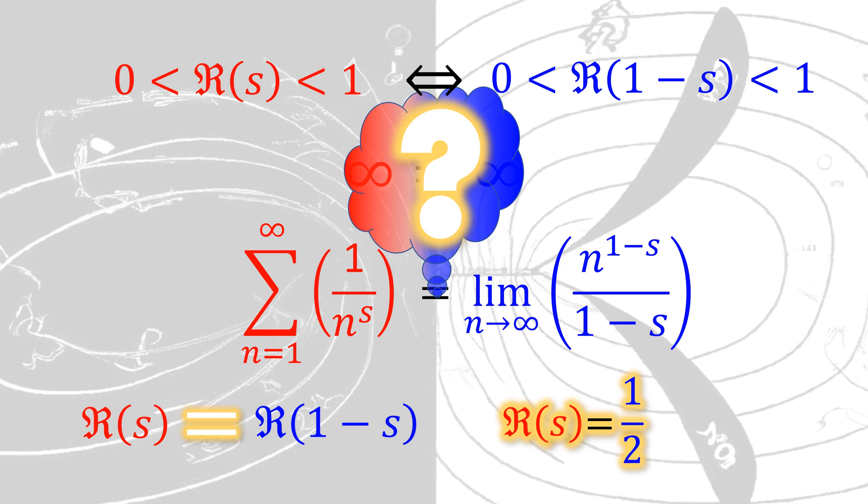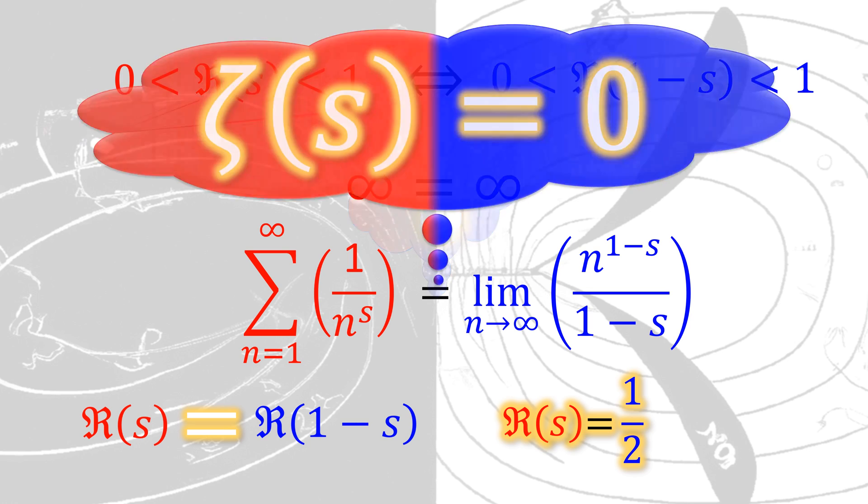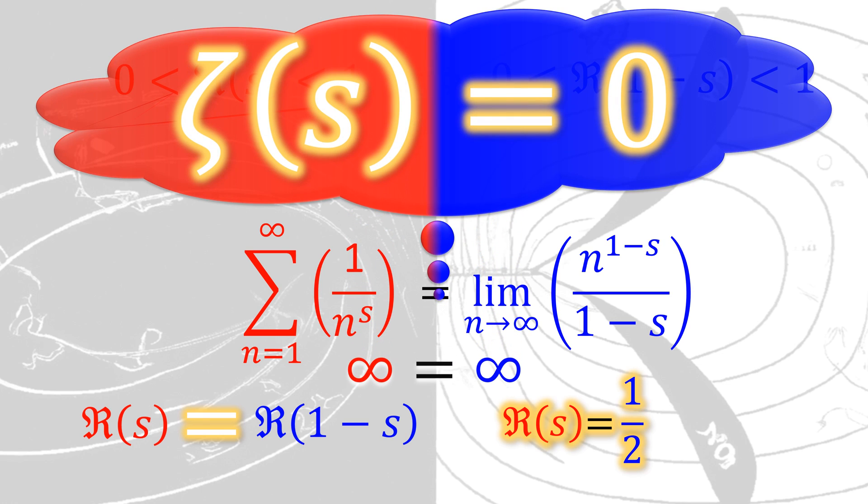It is possible to prove that the solutions to this indeterminate form are identical to the solution to the analytic continuation of the zeta function equal to 0. And we know that the Riemann's hypothesis is related to the zero of the zeta function and the real part of s equal to 1 half.